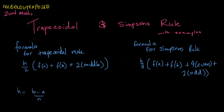Firstly, you have the formula for the trapezoidal rule, which is H over 2, F(A) — which is our lower limit — F(B), the one on top, and then 2 times the middle. And then the formula for Simpson's rule, which is H over 3, F(A) plus F(B) plus 4 even plus 2 odd.